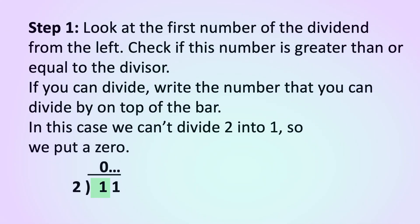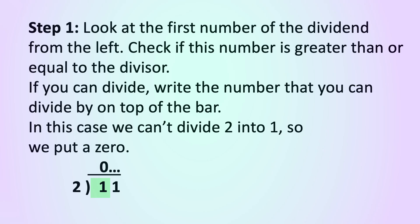Step 1. Look at the first number of the dividend from the left. Check if this number is greater than or equal to the divisor. If you can divide it, write the number that you can divide by on top of the bar. In this case, we can't divide 2 into 1, so we put a 0.